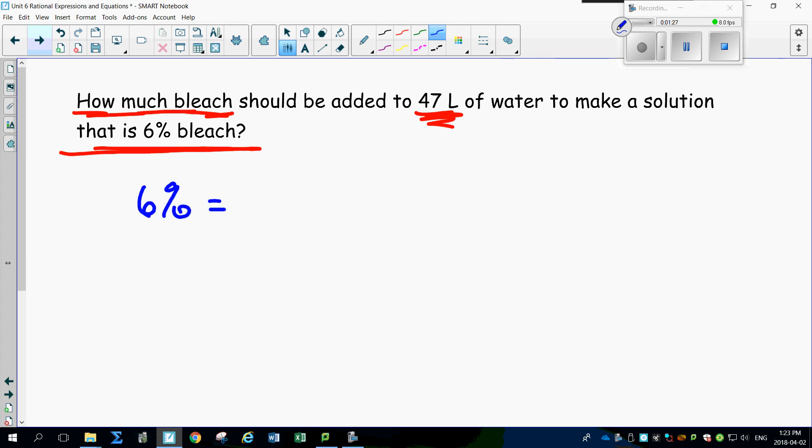Look what's going to happen. Six percent can be written as a ratio. That's basically 6 out of 100. What does that mean? Out of your total bleach or total solution, out of your total solution, six parts of it is bleach. That's what 6% means.